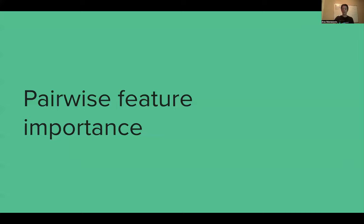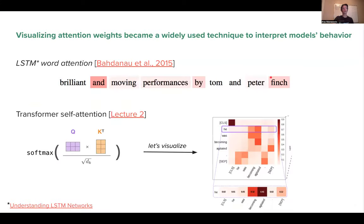If we talk about pairwise feature importances, self-attention immediately comes to mind. We have seen these kinds of heat maps where the value in an attention matrix represents the importance of one word for another. That importance might be suggestive of some known pairwise feature in linguistics, such as a subject-object word relation, or something else.